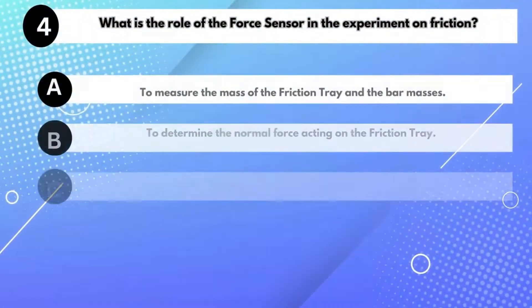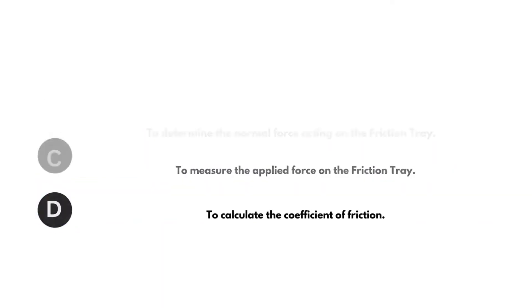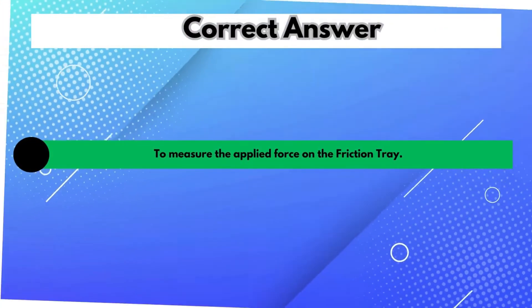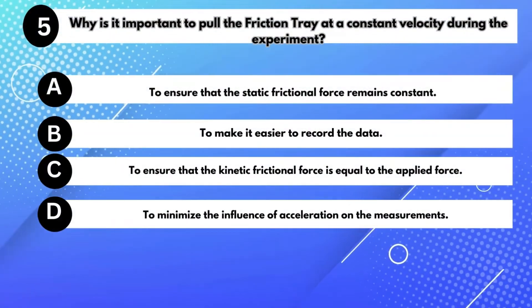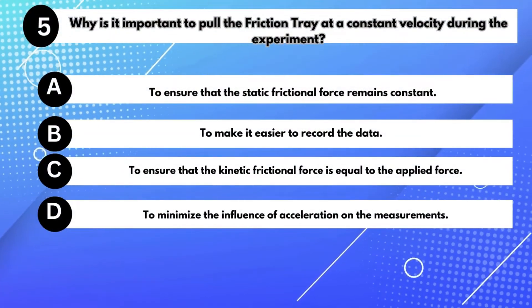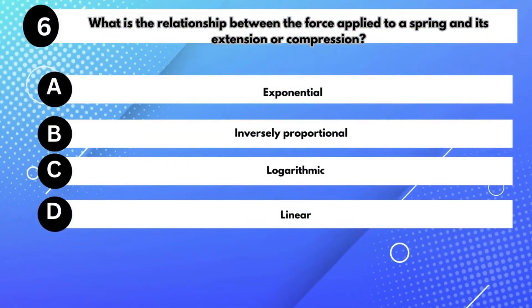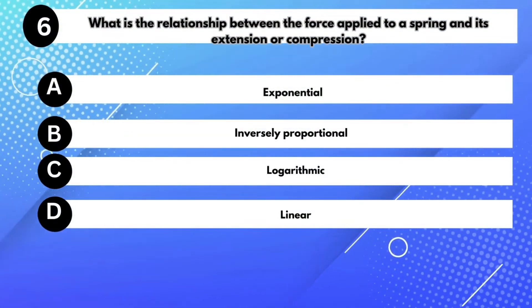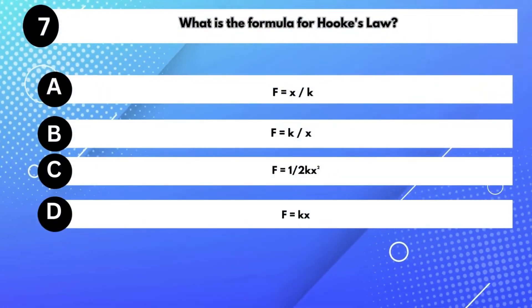What is the role of the force sensor in the experiment on friction? Answer: To measure the applied force on the friction tray. Why is it important to pull the friction tray at a constant velocity during the experiment? Answer: To minimize the influence of acceleration on the measurements. What is the relationship between the force applied to a spring and its extension or compression? Answer: Linear.